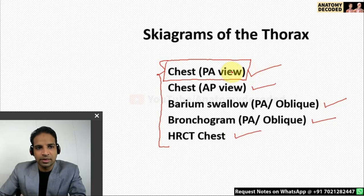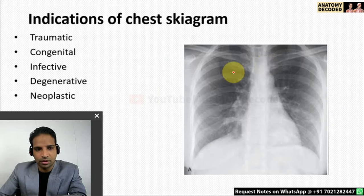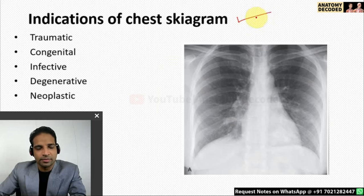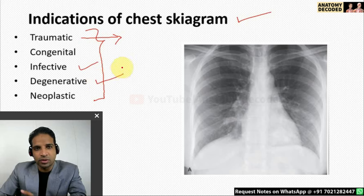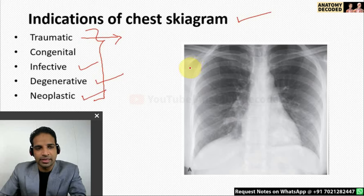Let us begin with the chest X-ray posterior-anterior view. Why is the chest X-ray required? There are many indications — the patient may present with any trauma, or if you want to detect any congenital conditions, infection in the chest such as tuberculosis, degenerative changes due to age, or cancerous and neoplastic conditions. So there are many indications for prescribing a chest X-ray to a patient.